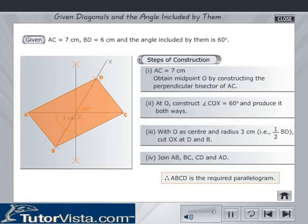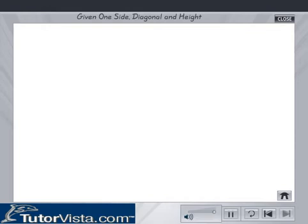Then ABCD is the required parallelogram. Click on the home button or the next button to view the next type of construction. Construction of a parallelogram given one side, diagonal and height. The data given is AB is equal to 4 cm, height is equal to 2.5 cm and AC is equal to 3.5 cm.